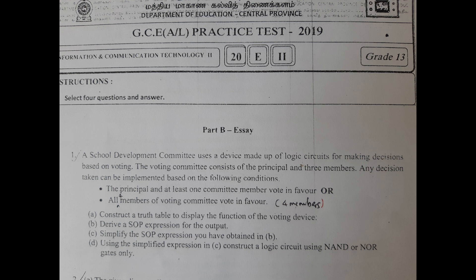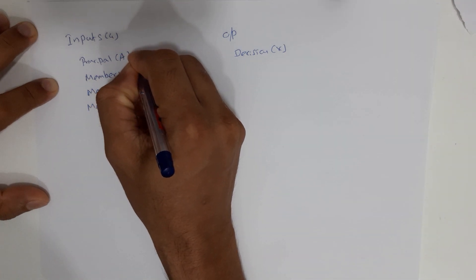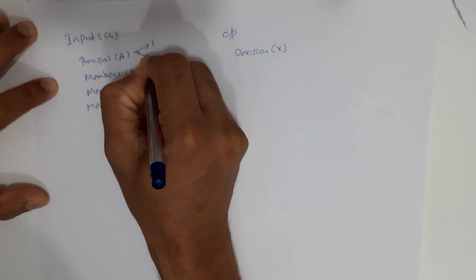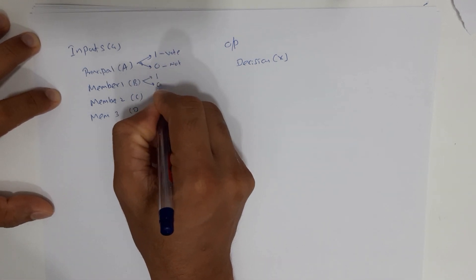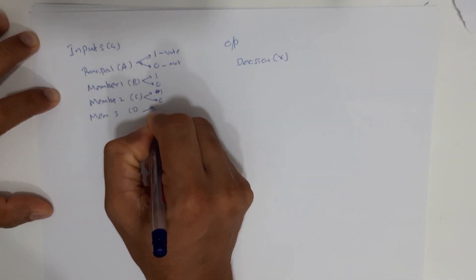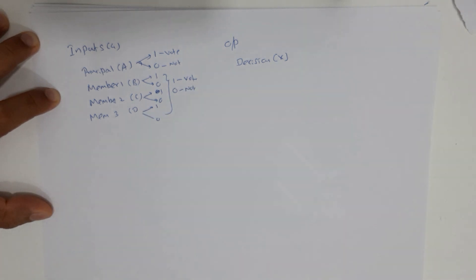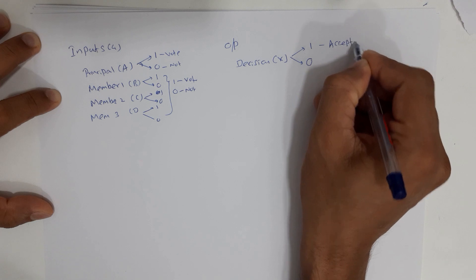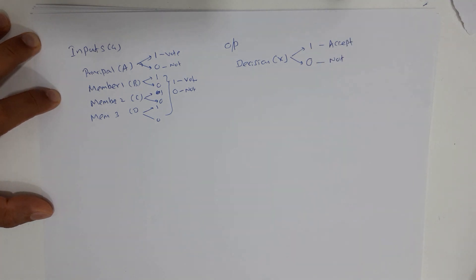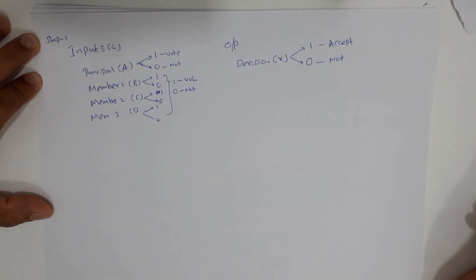The question says any decision taken can be implemented based on the following conditions. What the members can do is vote or not vote, so we'll label 1 as voting and 0 as not voting. For all members, the concept is the same — 1 means voting, 0 means not voting. For the decision: 1 means the decision is accepted by the team, and 0 means it is not accepted. This is step 1 — defining inputs, outputs, and assigning 1s and 0s.